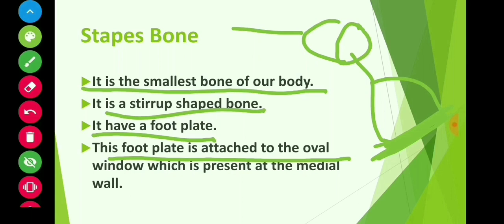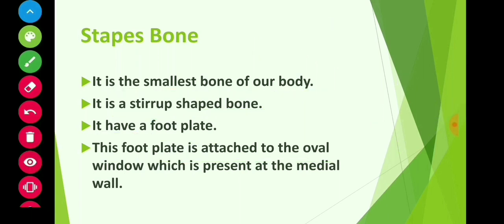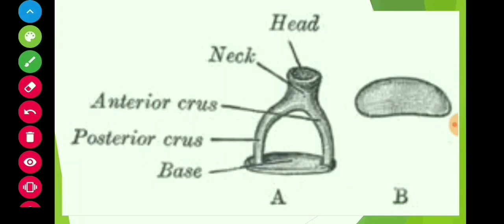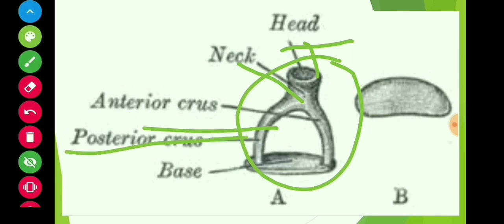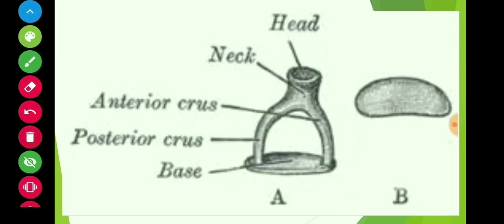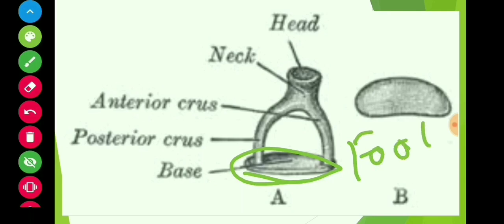The foot plate is attached to the oval window, not the round window — the oval window which is present at the medial wall leading to the inner ear. This is the head of the stapes from where it is attached to the incus bone. This is the neck, this is the anterior crus, this is the posterior crus, and this is the base of the stapes, which is also called the foot plate.